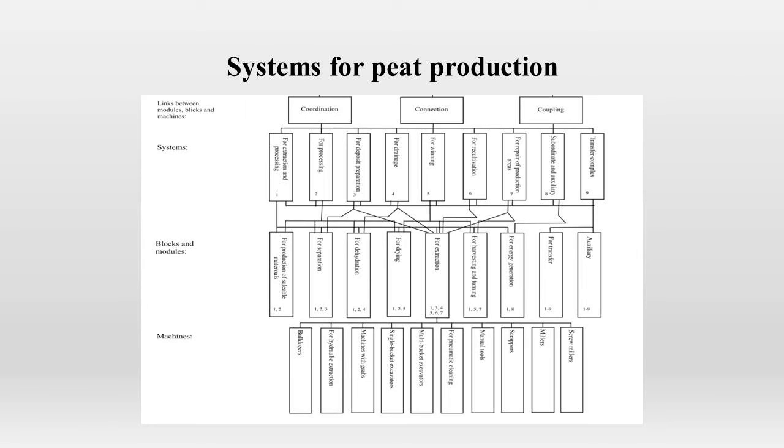And now I'll tell you about peat production systems. Choice of mining machinery system depends on the type of raw material needs to be produced. Mining machinery system is a set of blocks, modules, and machines integrated into a single chain. This interconnection becomes possible with the help of links providing coordination, connection, and coupling. There are nine systems that, being combined, allow performing peat extraction.